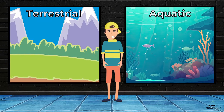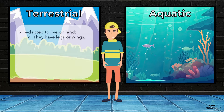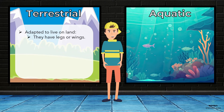So, what's the difference between terrestrial and aquatic animals? Well, terrestrial animals have adapted to live on land. They have legs or wings to move around, and they breathe air through their lungs.